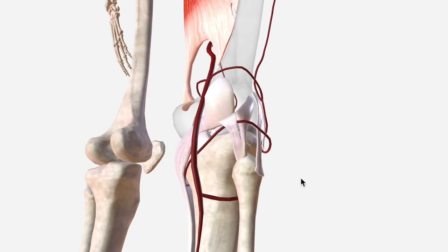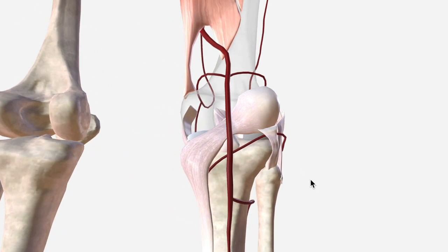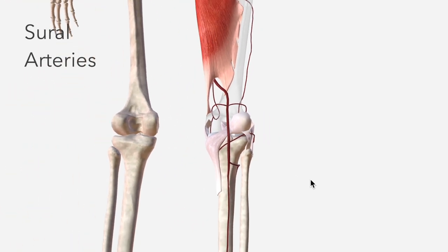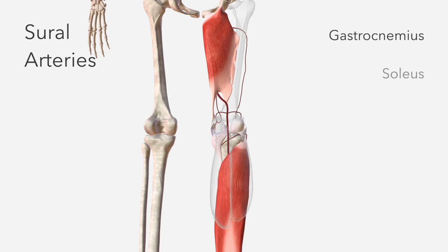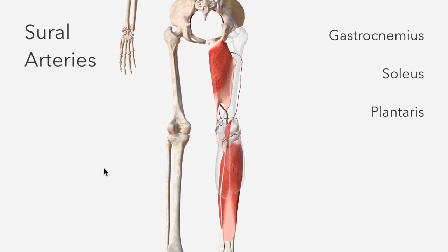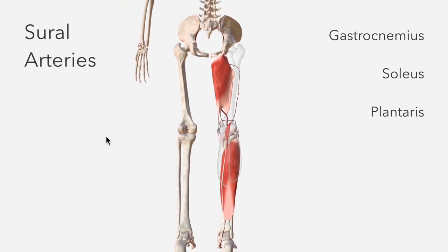The last branch of the popliteal are the sural arteries, which supply the gastrocnemius — which we brought in earlier — as well as the soleus muscle and plantaris. These are all supplied by the sural arteries.